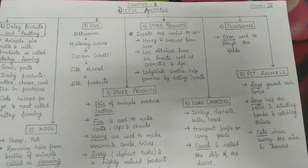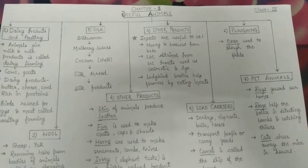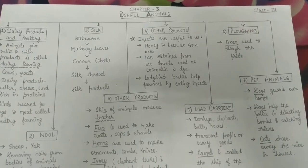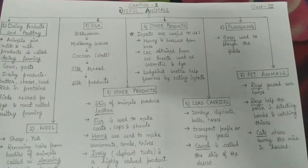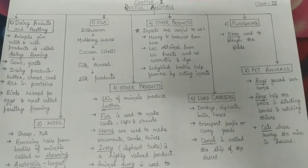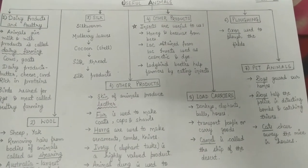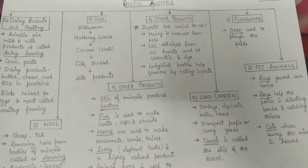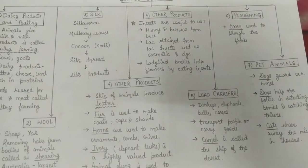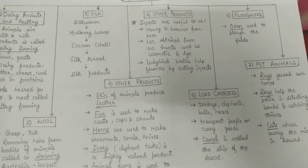Where do we use them? We will discuss the various uses of animals one by one. This is your chapter number 3: useful animals. Animals are useful to us in many ways, that's why we domesticate them. Domesticate means we keep them as a pet and we rear them.